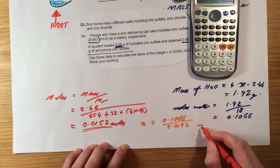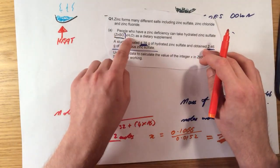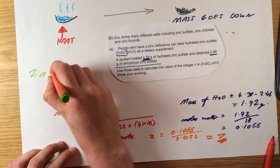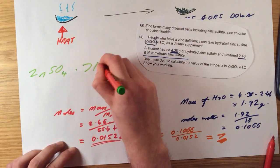Okay, so it's telling me that for every lot of ZnSO4 I've got 7 lots of water. So X therefore must be 7. The formula of my compound is ZnSO4 7H2O.